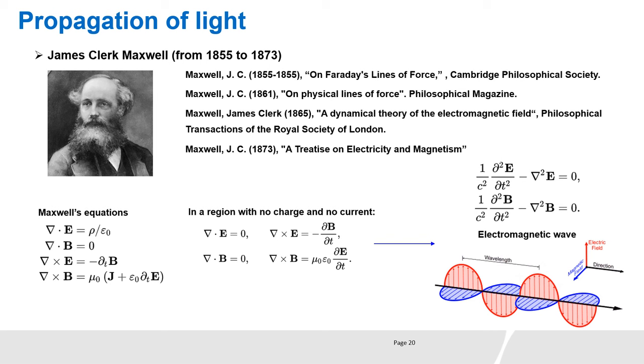Using the work of many scientists such as Ampère, Gauss, Weber and Faraday, and after having his own contribution, James Clerk Maxwell developed equations that combine electricity and magnetism into the same domain called electromagnetism. In a region with no charge and no current, Maxwell's equations lead to wave equations and predict that light is an electromagnetic wave.